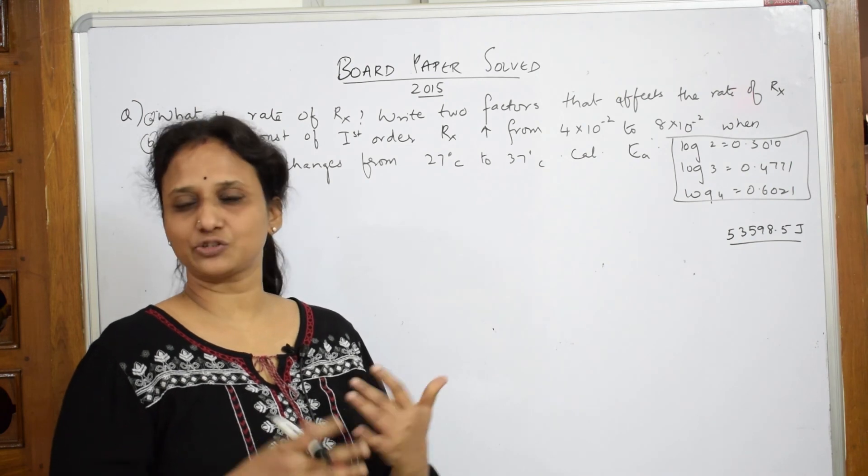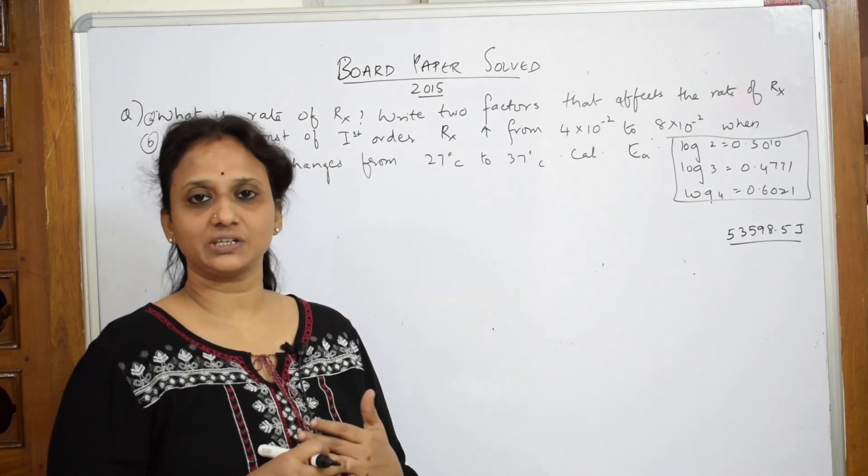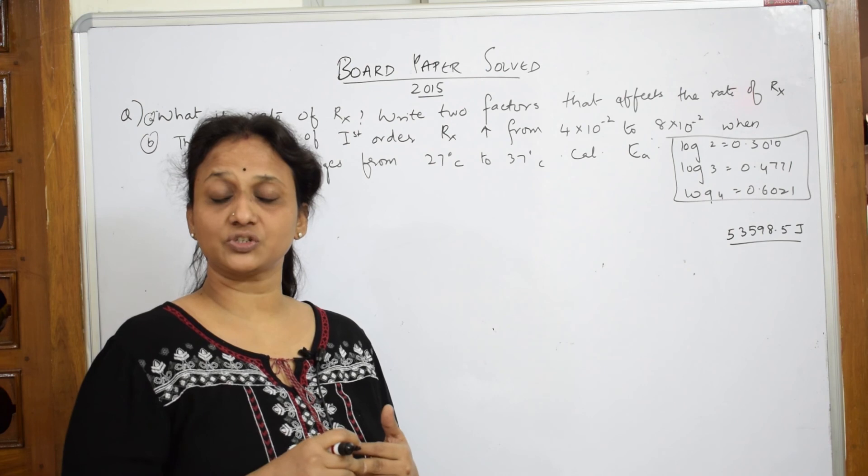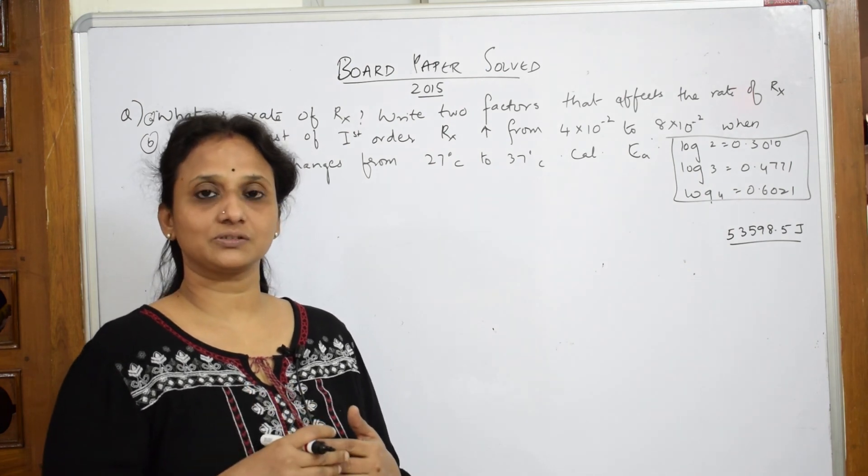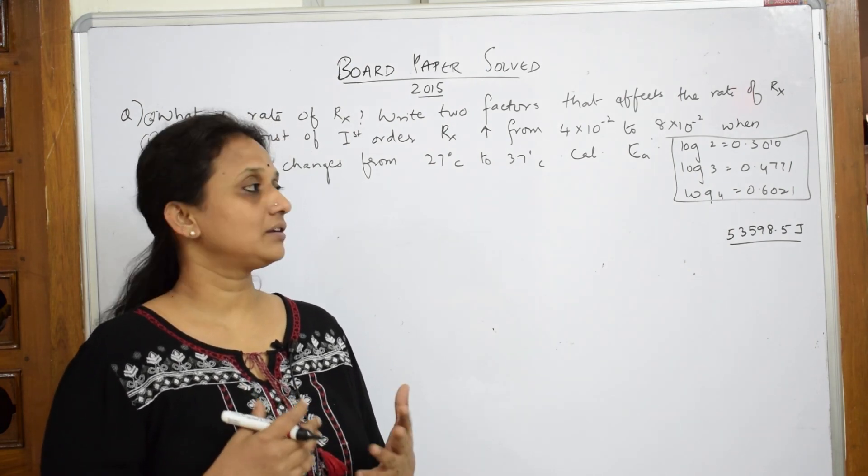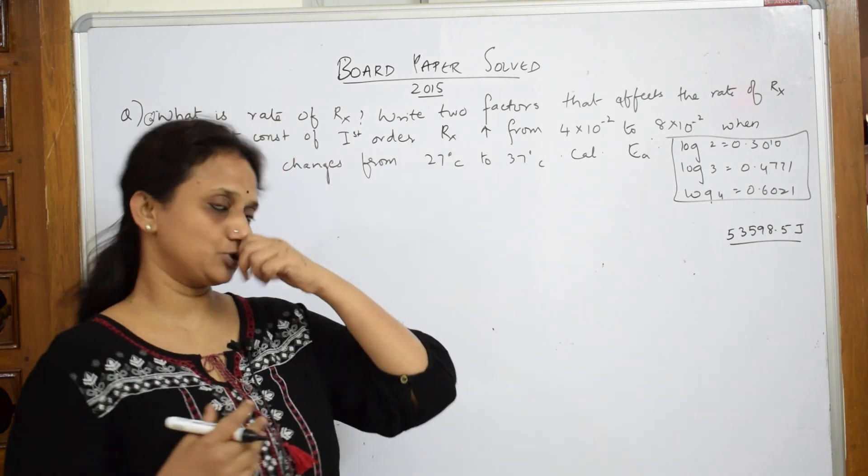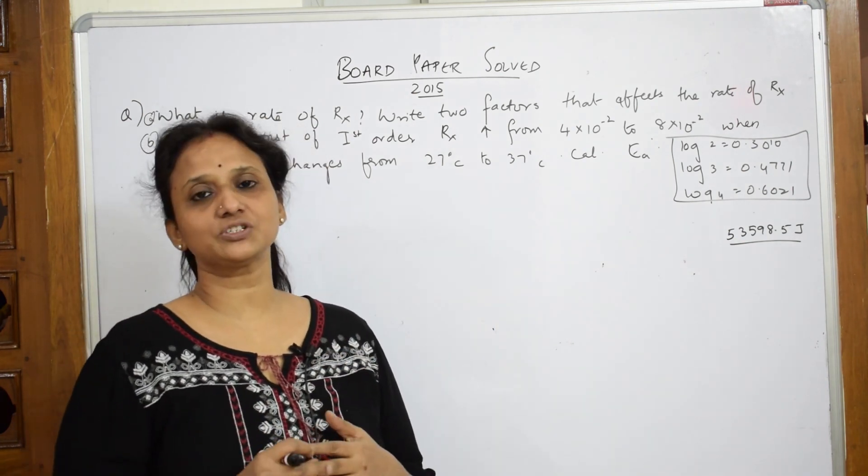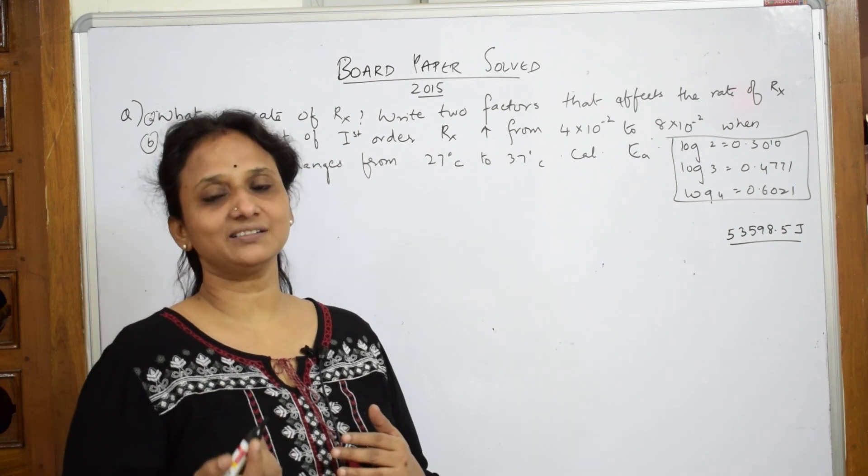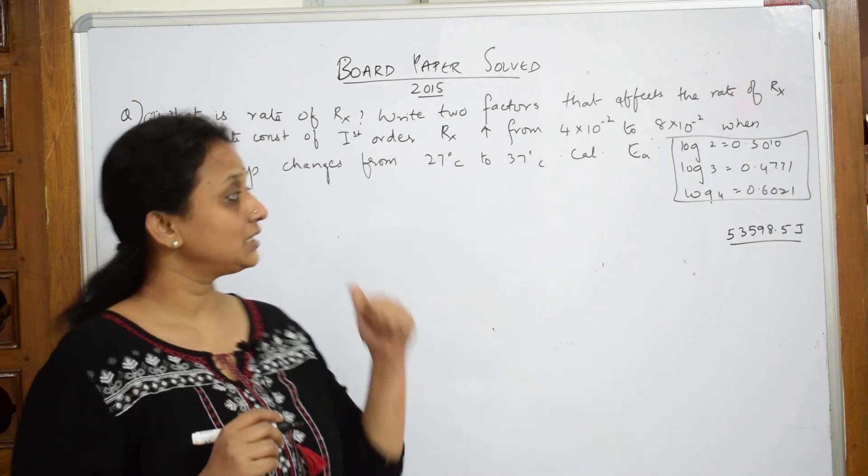What are the factors which affect the rate of the reaction? This also video was done on this topic also. What are the different factors? We said nature of the reactant, concentration of the reactant, effect of temperature, effect of catalyst, then physical state of the reactant. They have asked you to write any two, even when I pick up temperature and concentration of the reactant, these two would be enough.